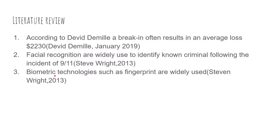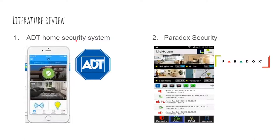Biometric technologies such as fingerprint are widely used, so users will likely react positively towards a new smart lock utilizing such technology. After reviewing existing systems, we found that the ADT home security system, which is widely used in Malaysia, has started to switch to an Android-based platform, showing that people are starting to accept Android application adoption.